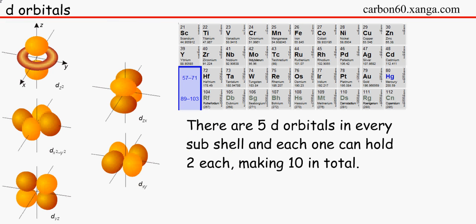The D orbitals. By the way, they may ask you to draw an S or a P orbital. But they will not ask you to draw a D or an F orbital. Because if you look at it, look how complicated it is. You do not need to learn that at the first bit of A level. But all you need to know that this is the D block. This is the transition metals over here. And there are 5 D orbitals in every subshell. And each one can hold, each orbital can hold 2 electrons each. So that makes 10 in total, as we know.